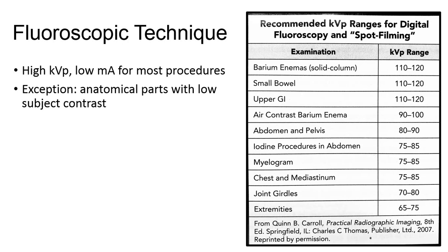The image here from your textbook displays some KVP ranges for fluoroscopy and spot filming for various exam types. If you notice, these are similar KVP ranges to overhead views performed with the associated exams. We select 110 to 120 KVP when single contrast barium is utilized, which is appropriate for barium's attenuation properties.